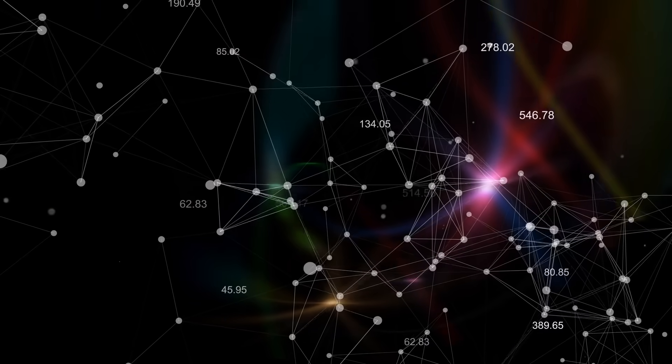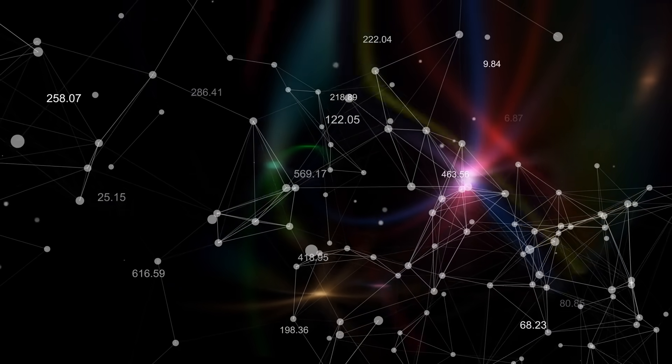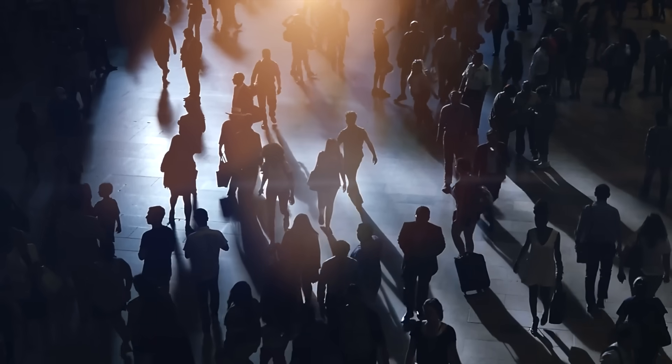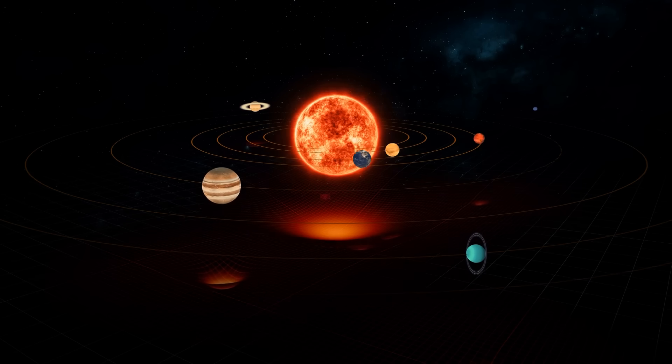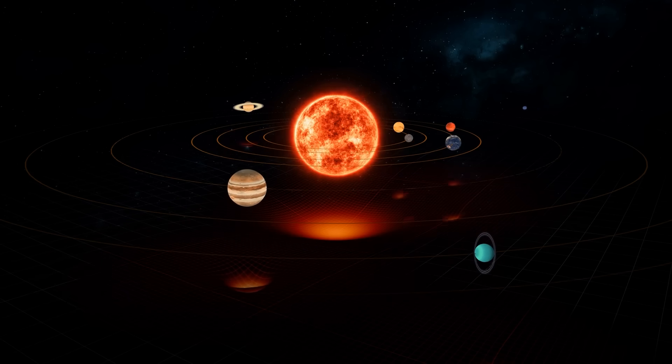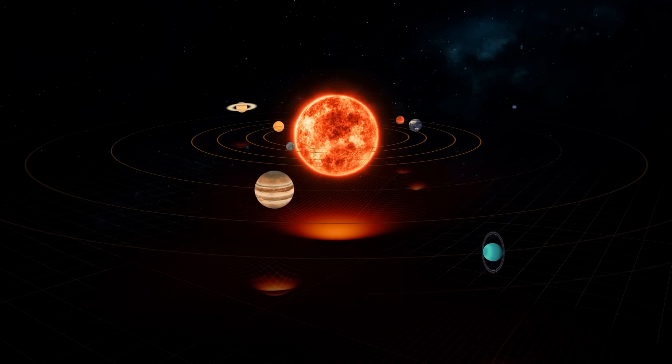The mathematical multiverse theory takes the idea of parallel worlds to an extreme. Instead of asking, what if there are other universes like ours? It asks, what if every possible mathematical structure exists, and each one is a universe?